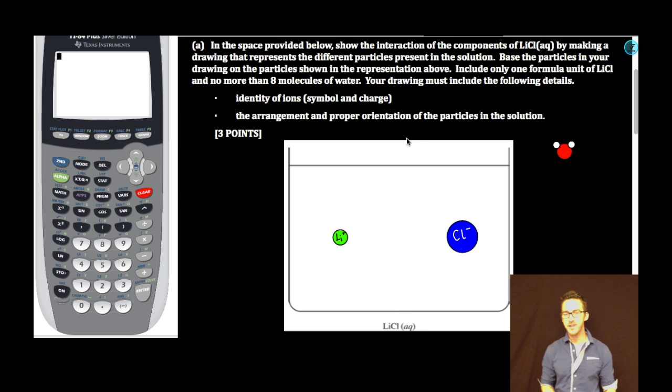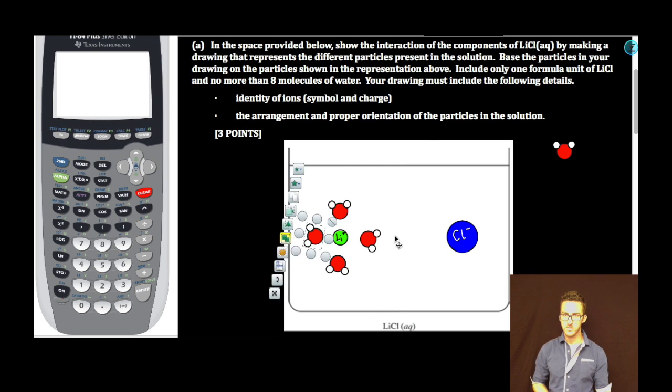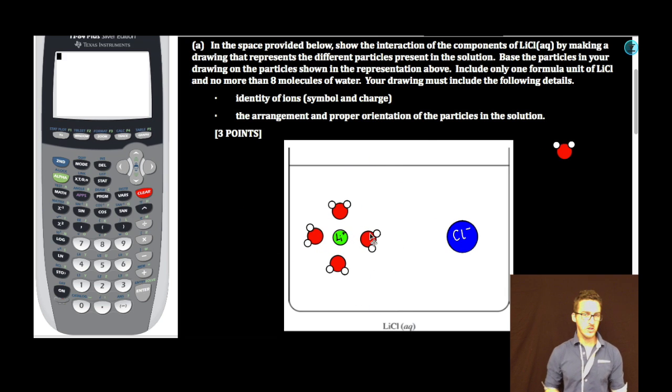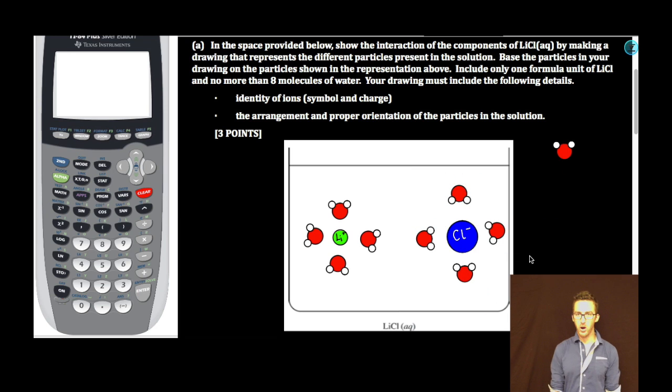We want no more than eight molecules of water. Remember that the molecules of water are going to orient themselves so that the negative ends, or the oxygen ends, are going to face the positive lithium ion. So if I were to draw four molecules of water around lithium ion, they should all be oriented as such. Opposite for the chloride ion, you should see the positive hydrogen ions of the water molecule oriented towards the negative chloride ion. Boom. Three points. And you need to practice your art skills.